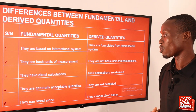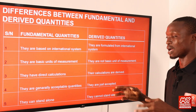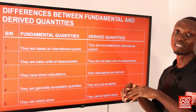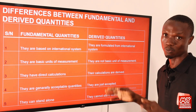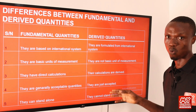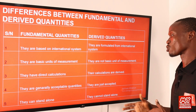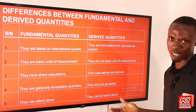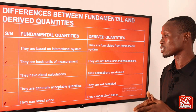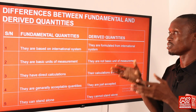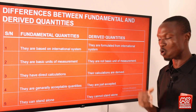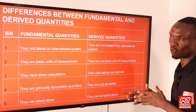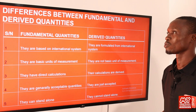Number four: fundamental quantities are generally acceptable everywhere in the world, whereas the derived quantities are just accepted in limited contexts. And lastly, number five: the fundamental quantities can stand alone, whereas the derived quantities cannot stand alone.